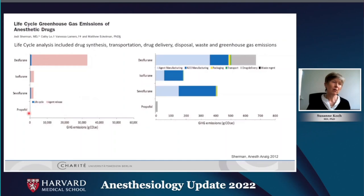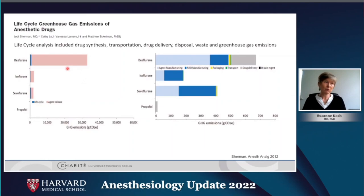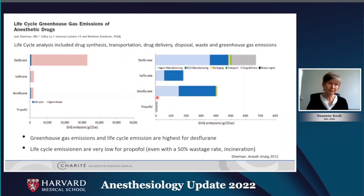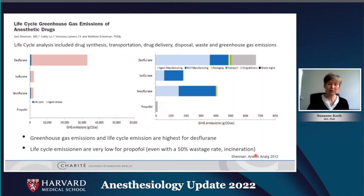Jodi Sherman then asked about propofol, comparing greenhouse gas emissions across anesthetic drugs — desflurane, isoflurane, sevoflurane — and propofol in a life cycle analysis. She found that the greenhouse gas emissions from use are highest for desflurane. But even looking at drug synthesis, transportation, delivery, and disposal waste, desflurane still has the highest carbon footprint and propofol remains the lowest. She calculated with a 50% waste rate, and propofol requires incineration at 1,000 degrees Celsius to be properly destroyed, which was factored into the study.